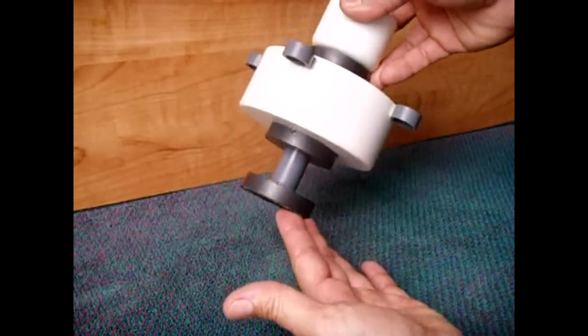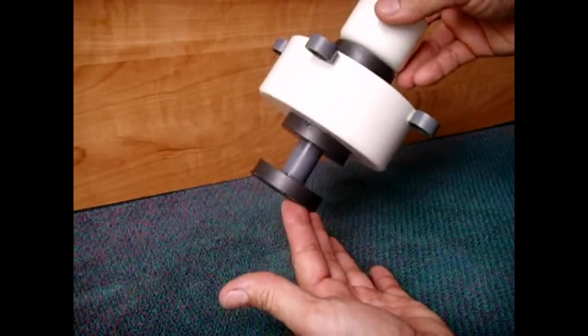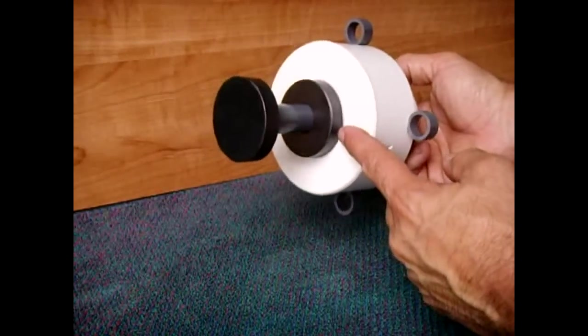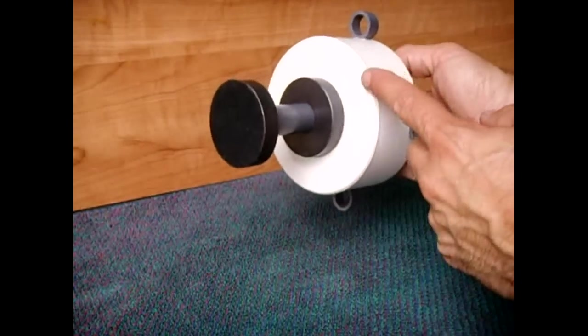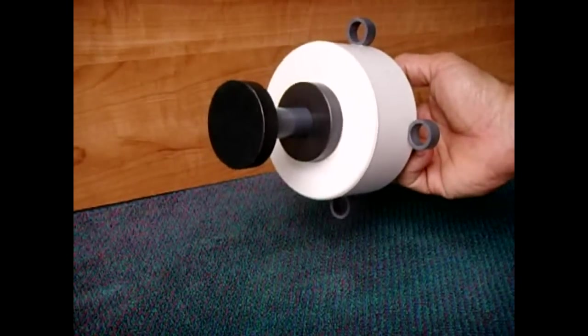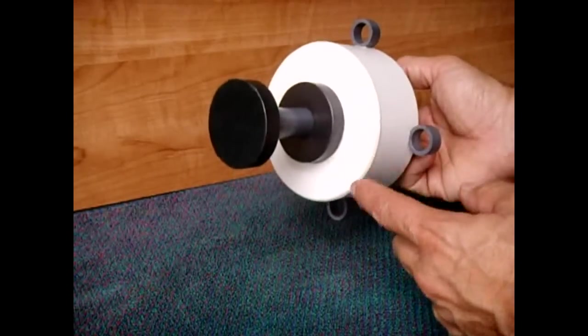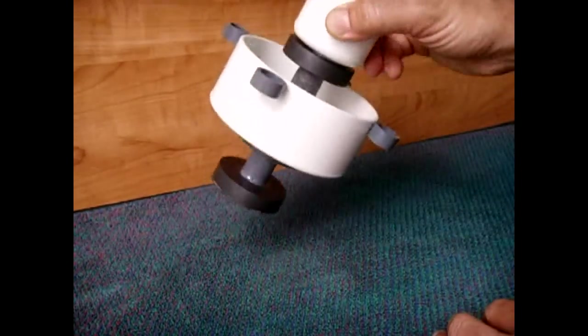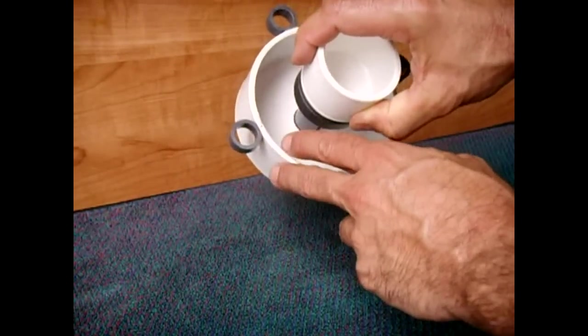Now, to make this holder, it's very simple. You have a magnet attached to the bottom of a PVC cap. This is a four-inch flat PVC cap. It's a thin wall cap. It's not a thick one.